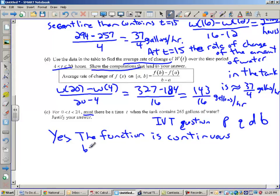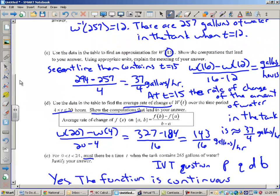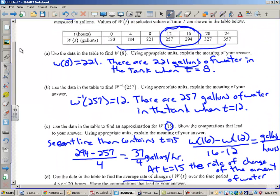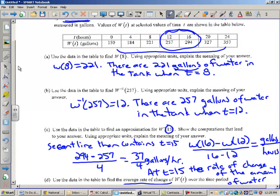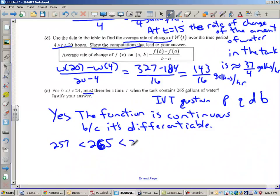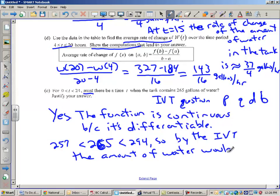How do I know that? Because it's differentiable. So, let's see if I can pick two that would contain 265. I'll just go from 12 to 16, from 257 to 294. So, 265 is in between 257 and 294. So, by the intermediate value theorem, the amount of water, or sometime between those times, the amount of water in the tank would have to be exactly 265 gallons.